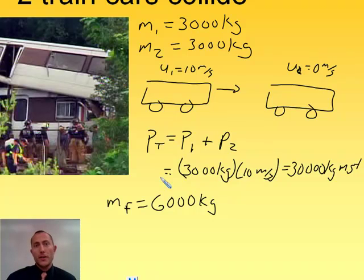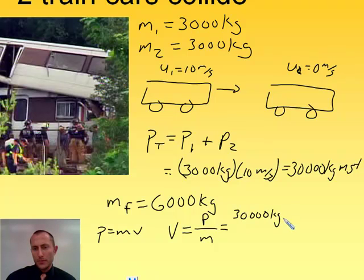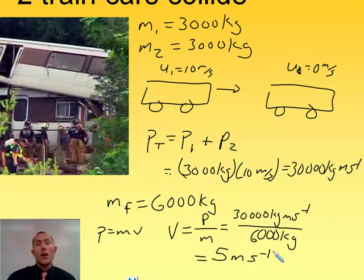We know the momentum is conserved, so our initial momentum has to equal our final momentum. P equals MV. And so V here, which is our final velocity, is equal to the momentum divided by the mass, which is equal to 30,000 kilogram meters per second over 6,000 kilograms. Which is going to give us a final velocity of 5 meters per second. So momentum stays the same, the mass doubles, the velocity is cut in half. That seems fairly reasonable.